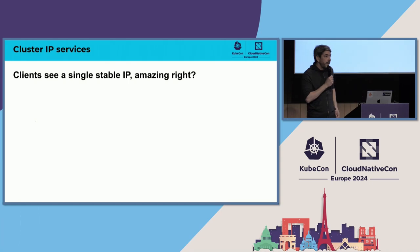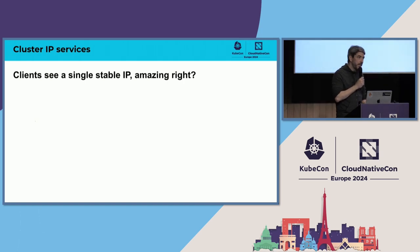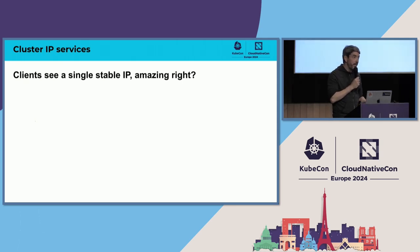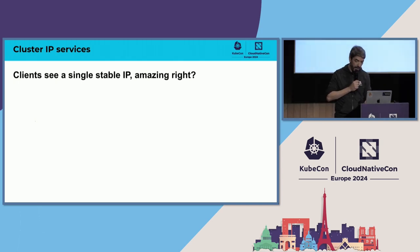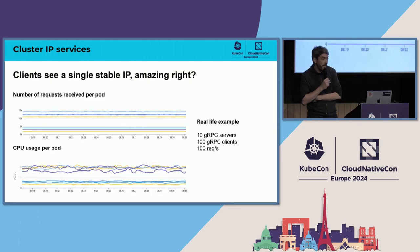Cluster IP services are great because clients always see a single IP. That's extremely convenient because they don't have to care about the number of backends, the fact that backends will scale up and down, or the fact that sometimes a backend will be unreachable. Everything is totally masked to the application. However, it's not perfect, and here is an example of issues you can get with cluster IPs.